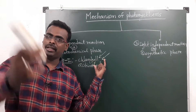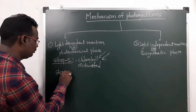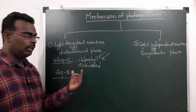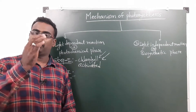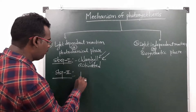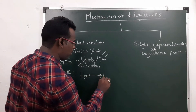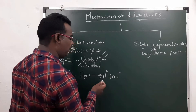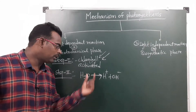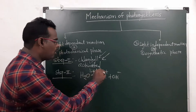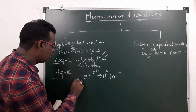In step two, whatever energy is absorbed by the chlorophyll is utilized to break down the water molecule. The water molecule is broken down and two ions are formed: H⁺ ions (hydrogen ions) and OH⁻ ions (hydroxyl ions). The breakdown of the water molecule in the presence of light using light energy is called photolysis.